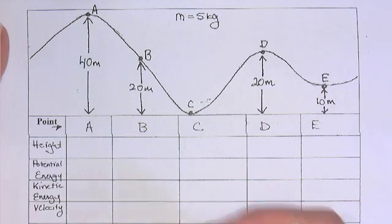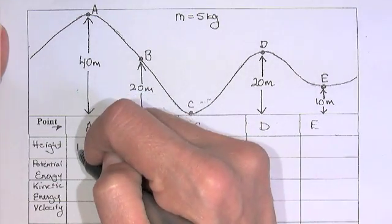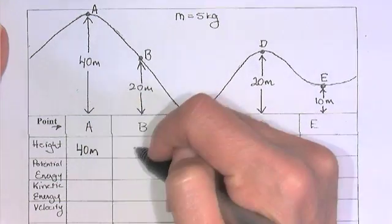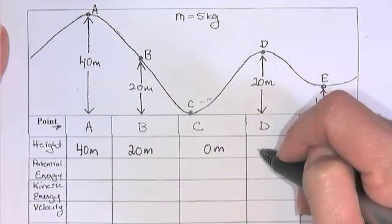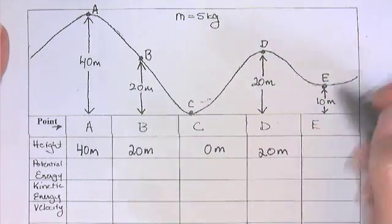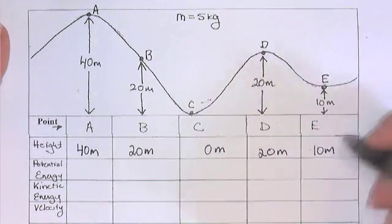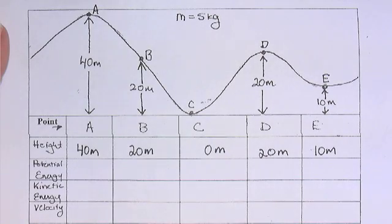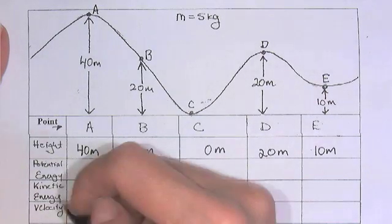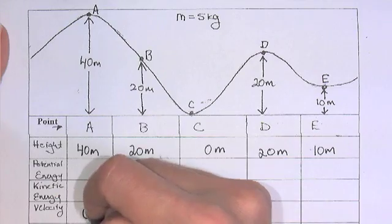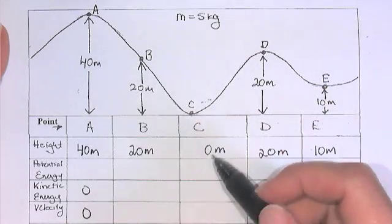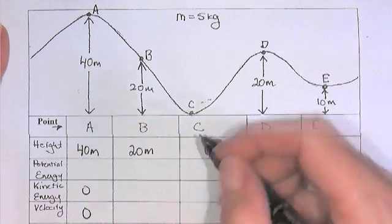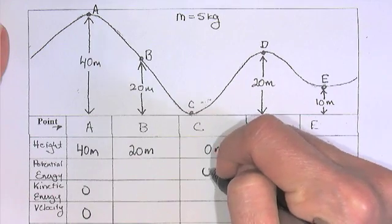So first off, let's just fill in the heights real quick. 40 meters, 20 meters, zero meters, 20 meters, 10 meters. The other thing we know is that since the car stops at the top of the hill, the velocity is zero and the kinetic energy is therefore zero. And here, where the height is zero, the potential energy is going to be zero.